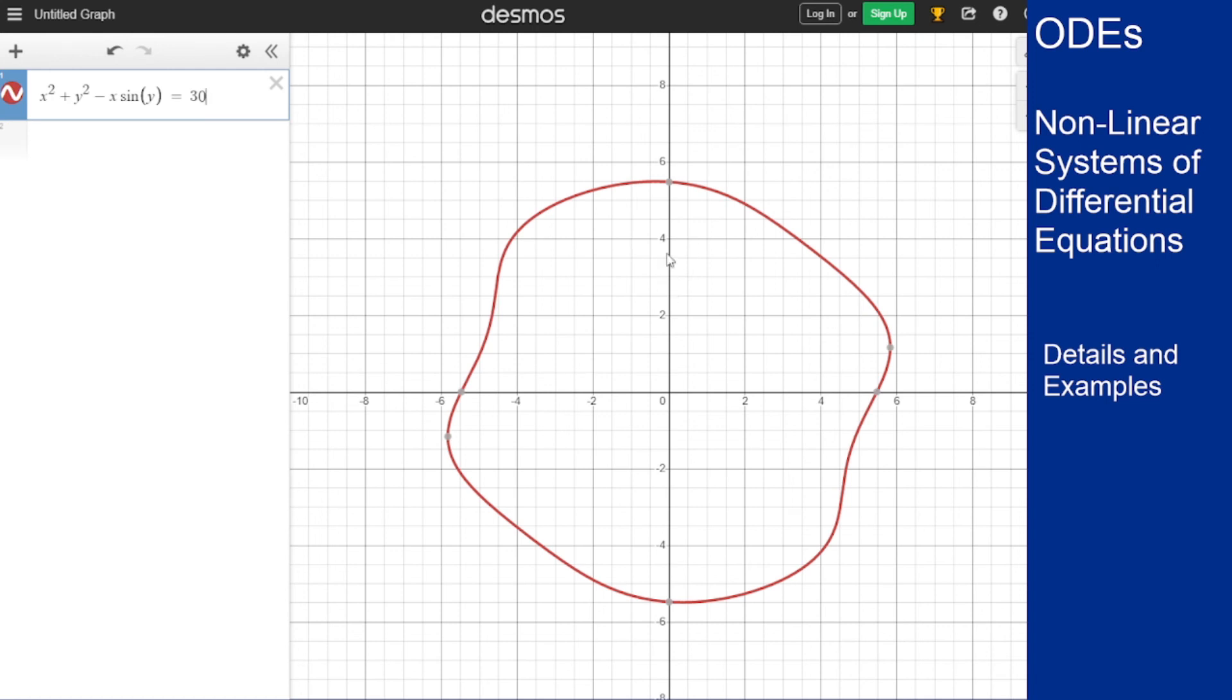If I put it in really close to zero, like say at one, it looks more like an ellipse. And so as you bring this in closer and closer to the origin, you get things that are more and more elliptical that look more and more like the solution to the linear problem.